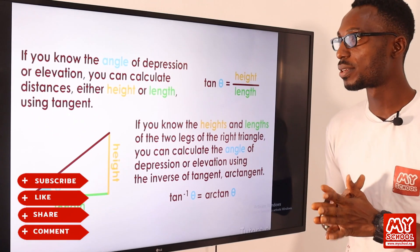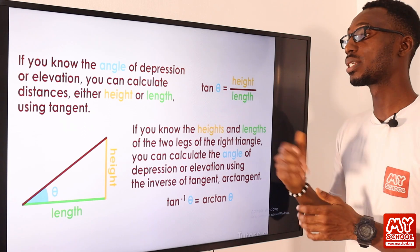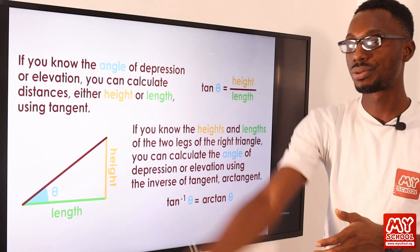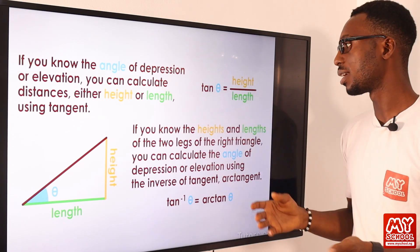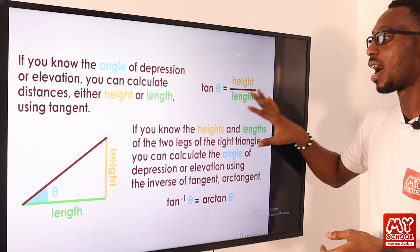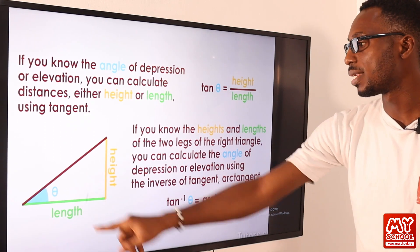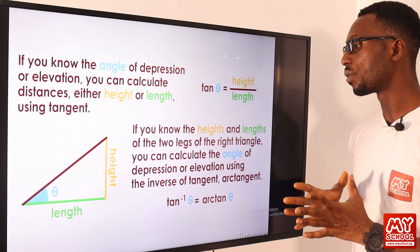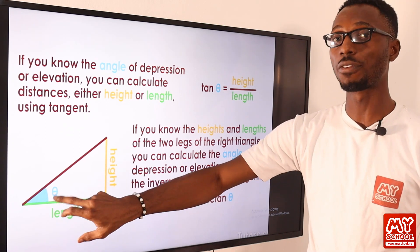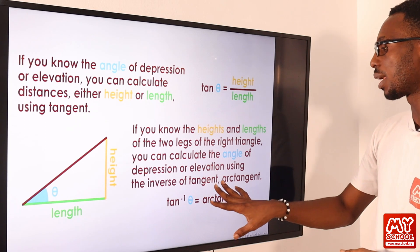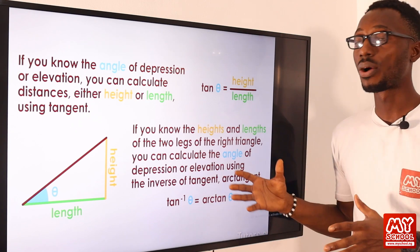To conclude regarding elevation and depression: if you know the angle of depression or elevation, you can calculate distances from the observer to the object being observed, as well as the height or length using tangent. Tan theta equals opposite over adjacent, which is height over length. If you know the height and the length of the two legs of the right angle, you can calculate the angle of depression or elevation using the inverse of tangent — tan inverse.